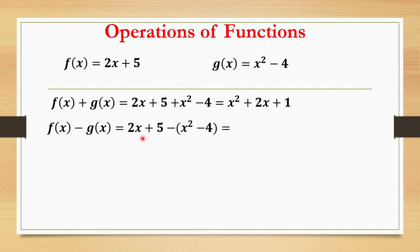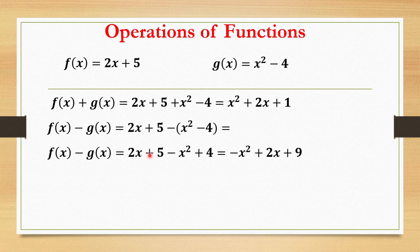Next we have subtraction. 2x plus 5 minus, open close parenthesis, x squared minus 4. We need the parenthesis to distribute this. 2x plus 5, negative x squared plus 4, because negative times negative is positive 4. So we have negative x squared plus 2x, 5 plus 4 is equal to positive 9. So negative x squared plus 2x plus 9 will be our final answer.